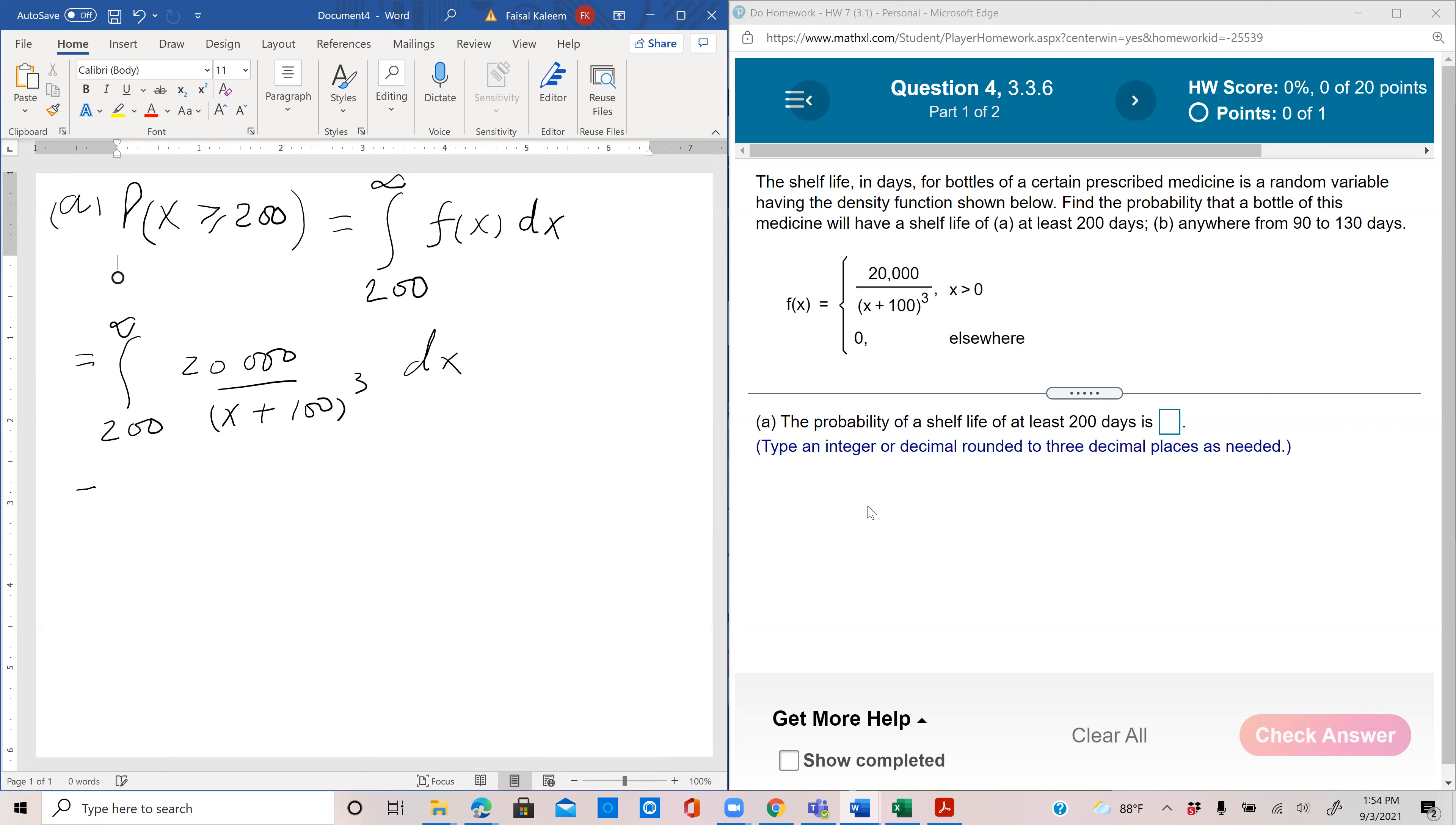This is basic integration. You can pull the constant out, 20,000, and you can write this as x plus 100 power negative 3.